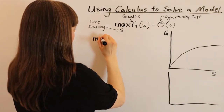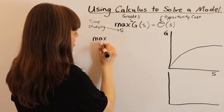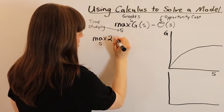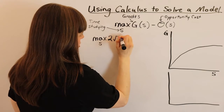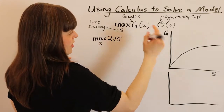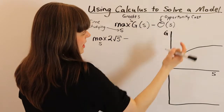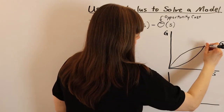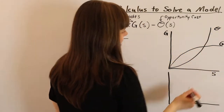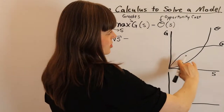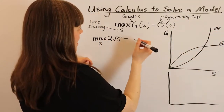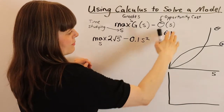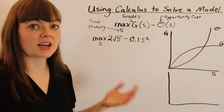We're going to replace this with a square root function and maybe a coefficient in front of that. So we're going to rewrite our maximization problem with some functional forms. We still have our choice variable of time spent studying, and we're going to use 2 times the square root of s as our grades function. For opportunity cost, we know it has an increasing marginal cost shape, which looks like s squared, so we'll put a coefficient in front and let that be s squared.